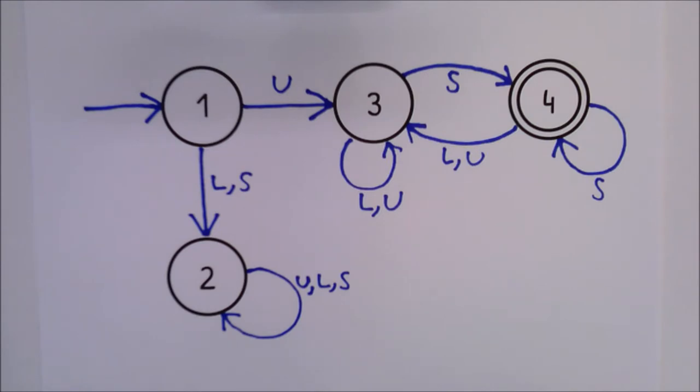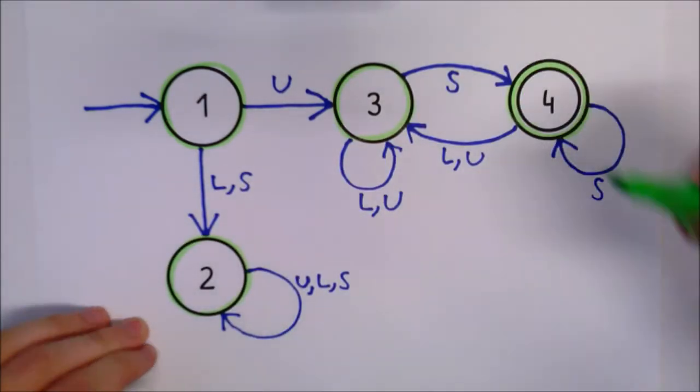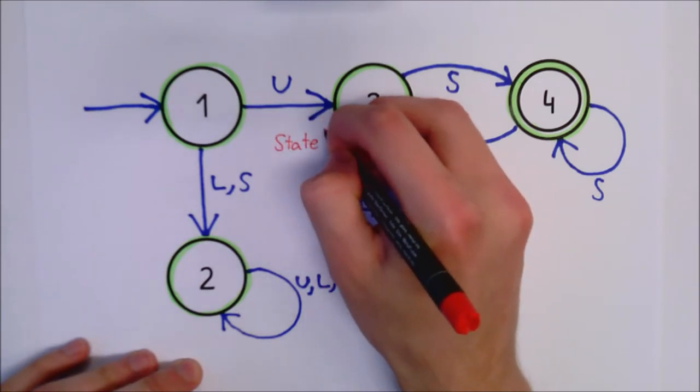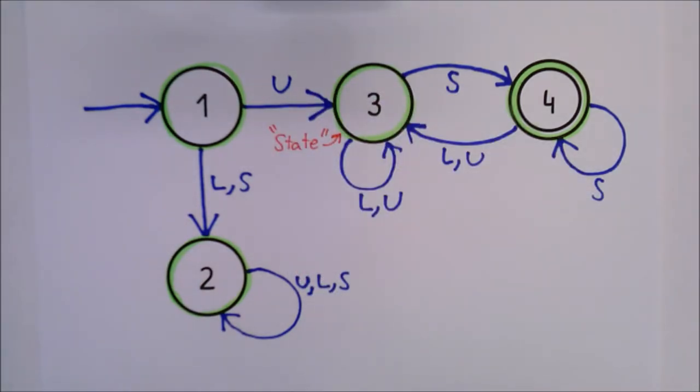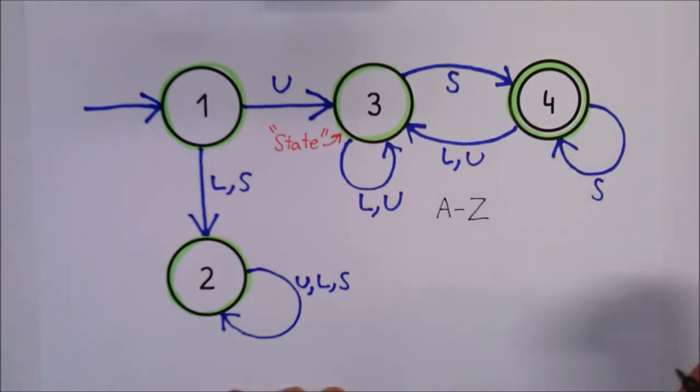First, we can see that this diagram has four circles, labelled 1, 2, 3 and 4. These are the different states of our automaton. Between these states are arrows labelled with U for uppercase characters, S for a full stop and L for lowercase characters as well as any other punctuation.